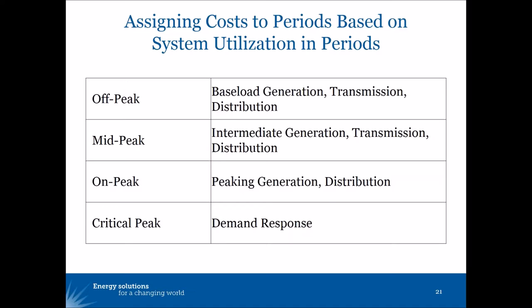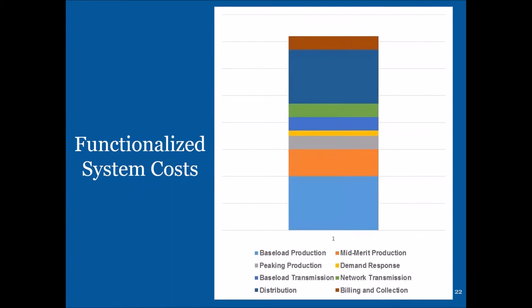The on-peak rate would include peaking generation and distribution, possibly not transmission costs because peakers are usually built in the service territory. A critical peak rate might be based on the cost of demand response. One can look at this graphically, taking the functionalized system costs — base load production, mid-merit production, peaking production, distribution, transmission, and collection costs.